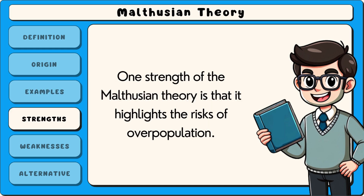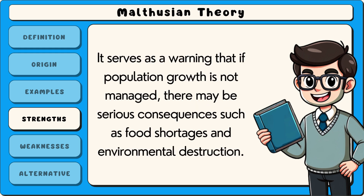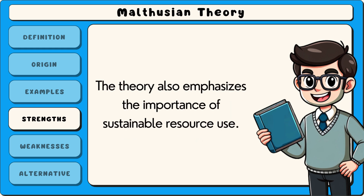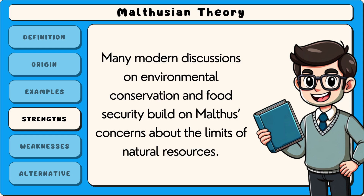One strength of the Malthusian theory is that it highlights the risks of overpopulation. It serves as a warning that if population growth is not managed, there may be serious consequences such as food shortages and environmental destruction. The theory also emphasises the importance of sustainable resource use. Many modern discussions on environmental conservation and food security build on Malthus's concerns about the limits of natural resources.